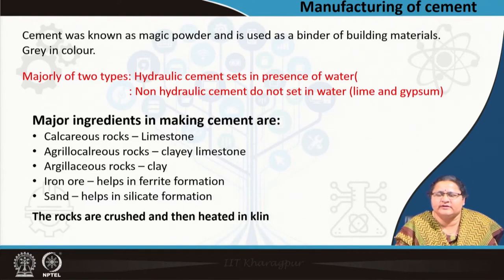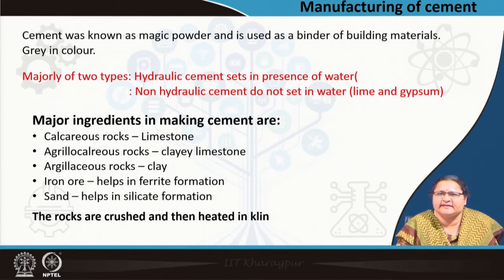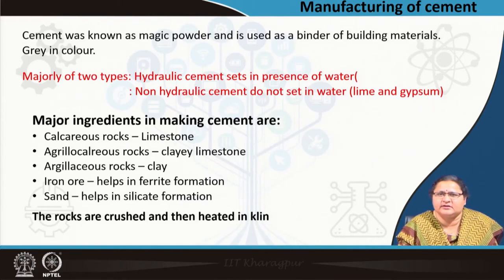Initially it was found to be grey in colour, and ordinary Portland cement was the name given when it started manufacturing. We have two types of cement: hydraulic cement, which sets in the presence of water — that is ordinary Portland cement — and non-hydraulic cement such as lime and gypsum, which do not set in water.